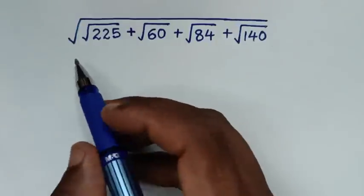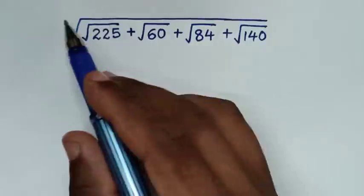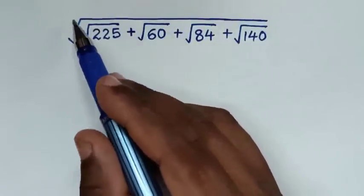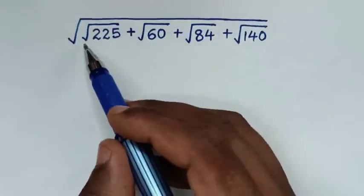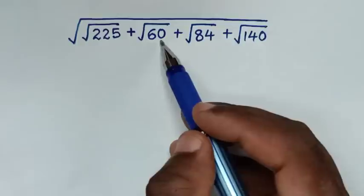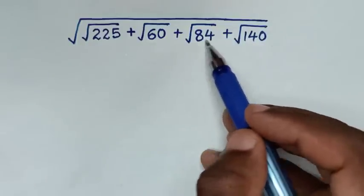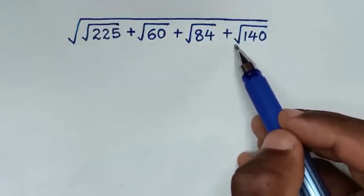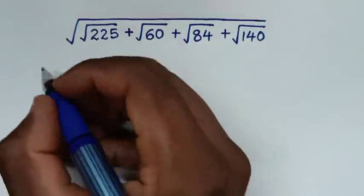Hello, you are welcome to solve this math problem by simplifying: the square root of the square root of 225, plus square root of 60, plus square root of 84, plus square root of 140.